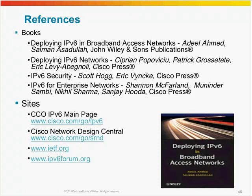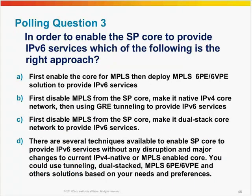There are also some really good websites available for your reference to get a lot of information. In the end, I would like to ask another polling question: In order to enable the SP core to provide IPv6 services, which of the following is the right approach? First: enable the core for MPLS, then deploy the MPLS 6PE/6VPE solution to provide IPv6 services. Second: disable MPLS from the SP core, make it a native IPv4 core, then use GRE tunneling to provide IPv6 services. Third: disable MPLS from the SP core and make it a dual-stack core. Or fourth: there are several techniques available to enable the SP core to provide IPv6 services without any disruption and major changes to the current IPv4 native or MPLS-enabled core — you could use tunneling, dual stack, MPLS 6PE/6VPE and other solutions based on your needs and preferences. Please take a poll on the right answer.